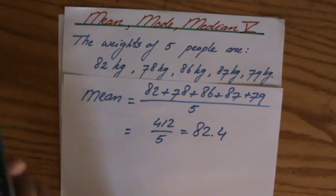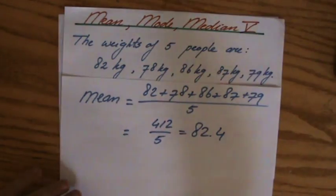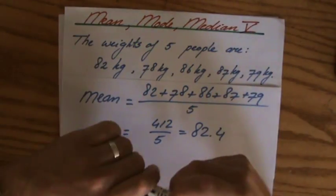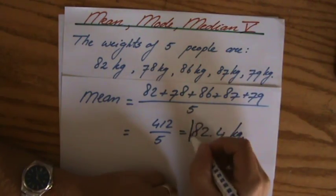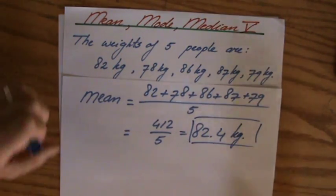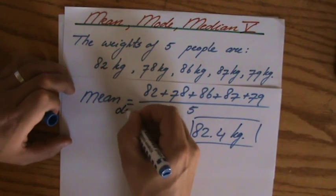Alright. So the mean in the first situation with those five people is 82.4 kilograms. But now I have another person joining. So I could say mean old if you like.